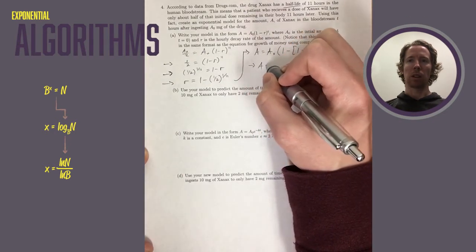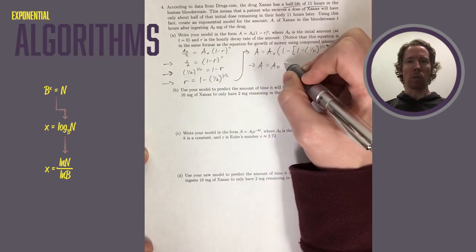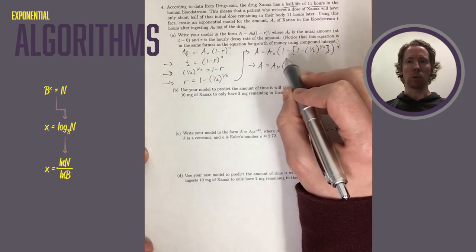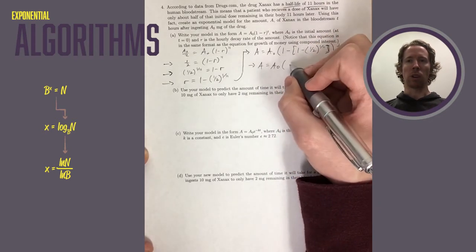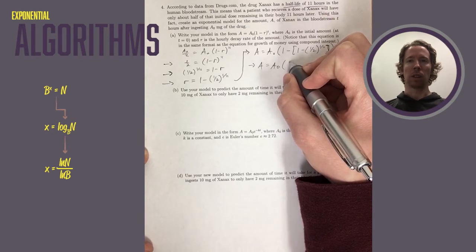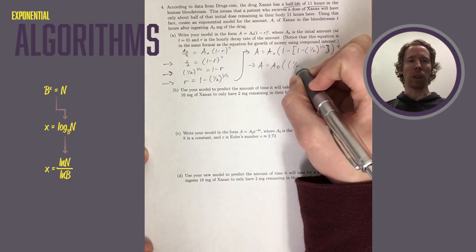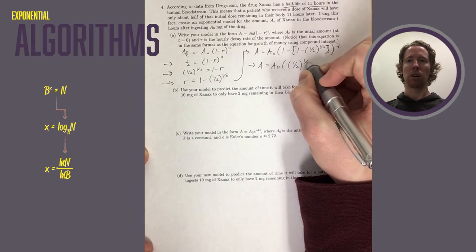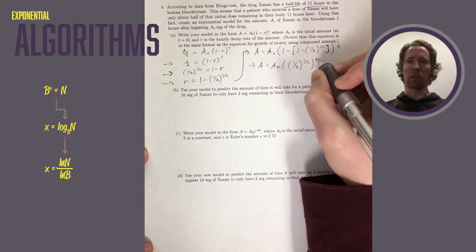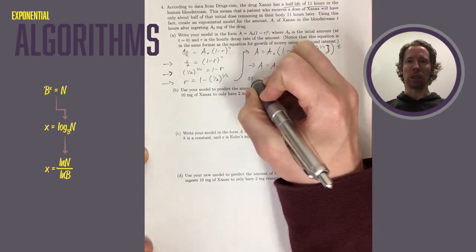But in the next step, when you distribute that negative 1, you'll get a 1 minus 1, which will go away, and then you get a minus 1 times negative 1 half. So negative times negative gives you a positive 1 half to the 1 over 11. All that is raised to the T power.